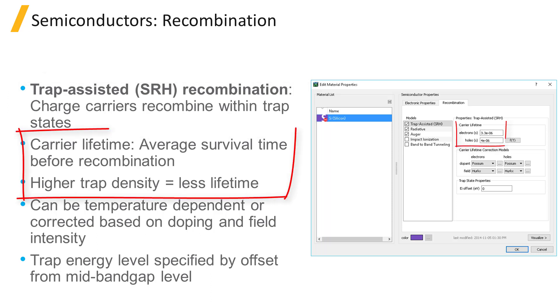The density of trap states within a material determines the average lifetime of carriers, the average time that carriers can survive before getting recombined, and this is taken as input in the material model. The higher the density of trap states or recombination rate, the lower the carrier lifetime.